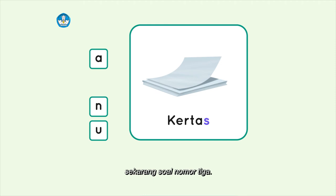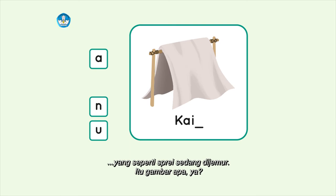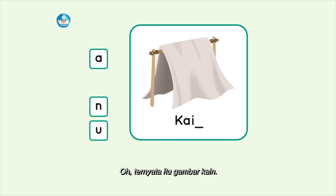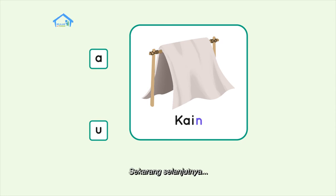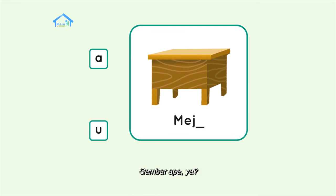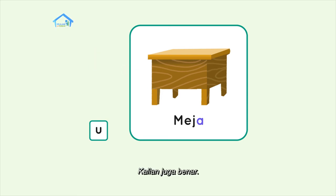Sekarang soal nomor tiga. Gambarnya seperti saprai sedang dijemur. Itu gambar apa ya? Oh, ternyata itu gambar kain. Berarti huruf terakhirnya K-A-I-N. Iya, huruf N. Hore! Aku benar. Sekarang selanjutnya, gambar nomor empat. Gambar apa ya? Benar, gambar meja. Huruf akhir yang harus kita isi apa ya? Ayo, kalian tebak. Iya, huruf A. Kalian juga benar. Hebat!